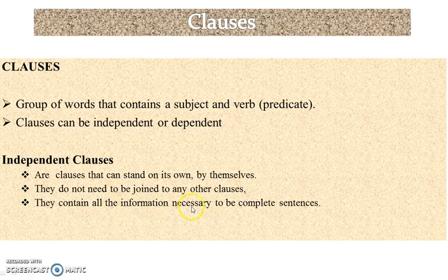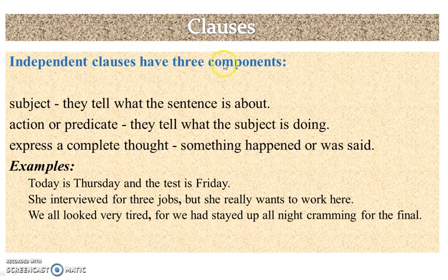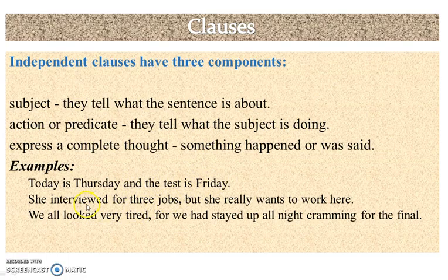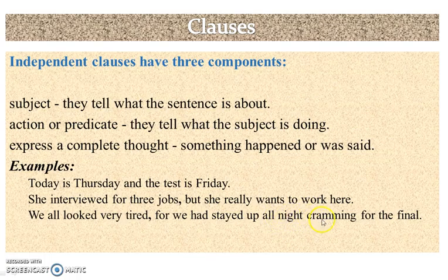Independent clauses contain all the information necessary to be a complete sentence. They have three components: a subject, which is the element the sentence is about; a predicate, which talks about what the subject is doing; and together they express a complete thought. For example: 'Today is Thursday,' 'She interviewed for three jobs,' 'But she really wants to work here,' and 'We all looked very tired, for we had stayed up all night cramming for the finals.'